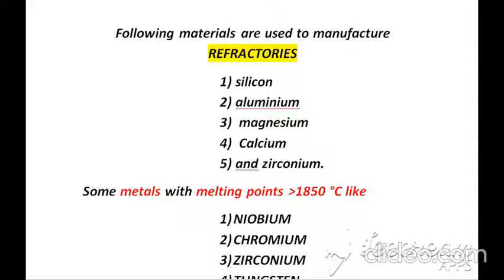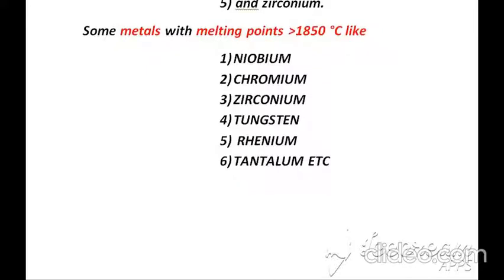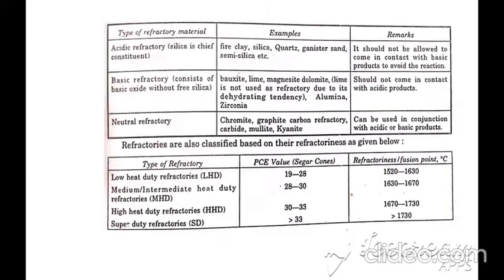The first raw material is silicon, the second is aluminium, the third is magnesium, the fourth is calcium, and the fifth is zirconium. Those metals which have a melting point greater than 1850°C — namely niobium, chromium, zirconium, tungsten, rhenium, and tantalum — are enlisted to manufacture refractory bricks.